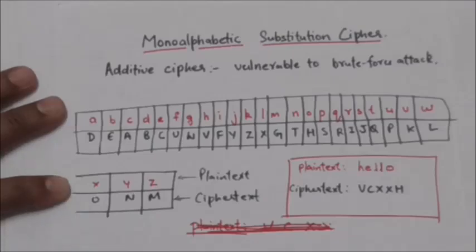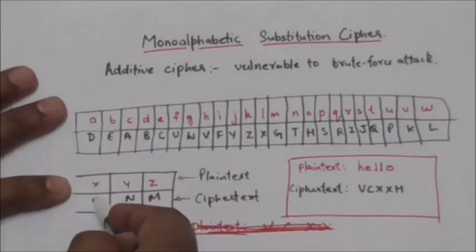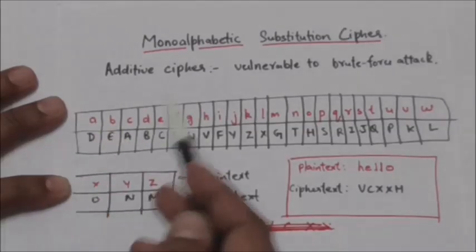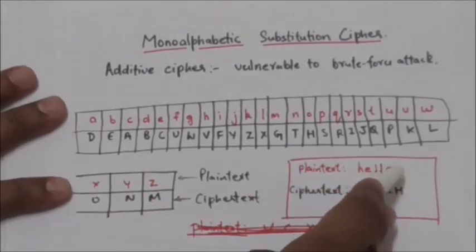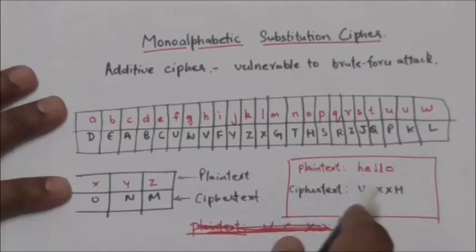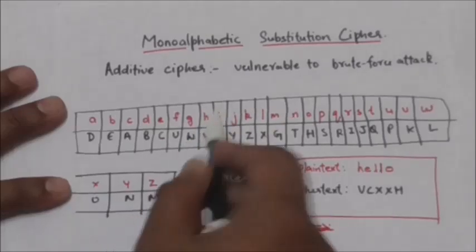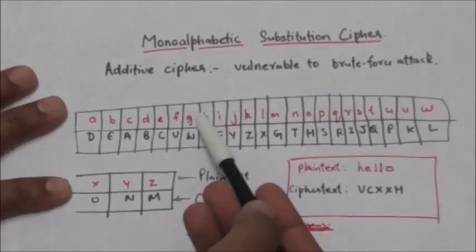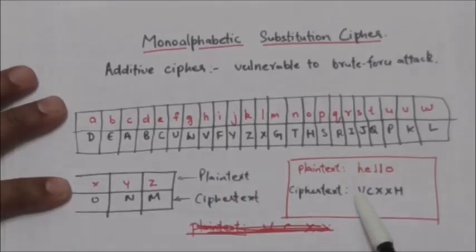Suppose both sender and receiver have agreed on this table showing the mapping for each character. Let's say the plaintext is H-E-L-L-O. The first character is H, and from the table you can see that the ciphertext character corresponding to plaintext H is V, so H will be encrypted to V.